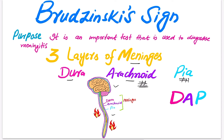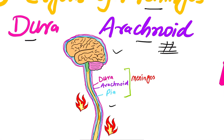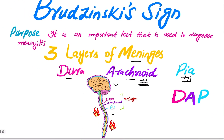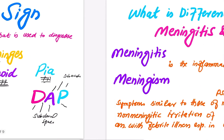The pia mater is the thinnest and innermost layer of the meninges. To summarize: dura mater is the outermost layer, arachnoid mater is the middle layer, and pia mater is the innermost layer covering the brain and spinal cord. Between the dura mater and arachnoid mater is the subdural space, and between the arachnoid mater and pia mater is the subarachnoid space.